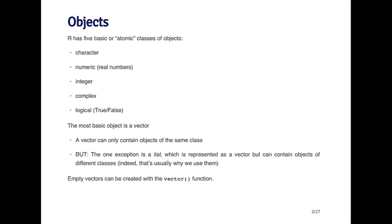The most basic object in R is what's called a vector. A vector can only contain objects of the same class. So it can have a vector of characters or a vector of integers. One thing you cannot do with a standard vector is have mixed types of objects. Everything in a vector has to be of the same class.